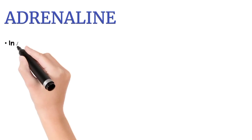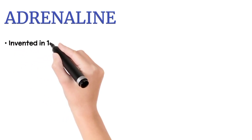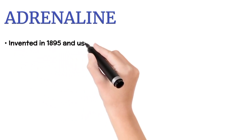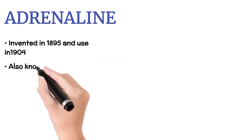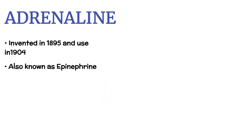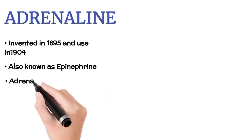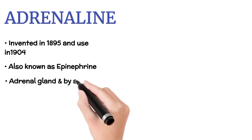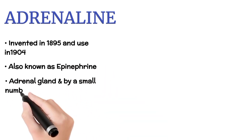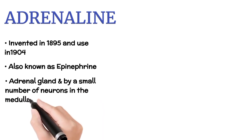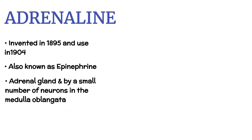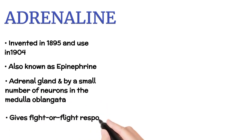Adrenaline was invented in 1895 and came into use in 1904. Also known as epinephrine, it is produced both by the adrenal gland and by a small number of neurons in the medulla oblongata. It is responsible for the fight or flight response.